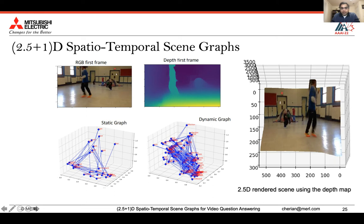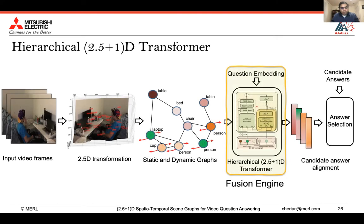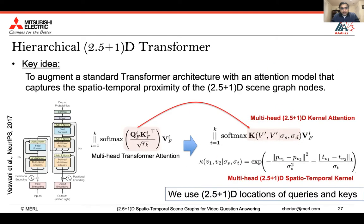So far, we have constructed a 2.5+1D semantic spatiotemporal scene graph with a compact static graph and a motion-enriched dynamic graph. Our next task is to use this for video QA, for which we propose a hierarchical 2.5+1D transformer. Note that a standard transformer learns relations between nodes from data; however, such statistical relations need not accurately capture spatiotemporal relationships for a given test video. For example, if a person always picks up a cup in the training data, the person and cup may have a strong but false correlation. Our idea is to use the spatiotemporal proximity of graph nodes as captured by the 2.5+1D scene graph to modulate relationship reasoning.